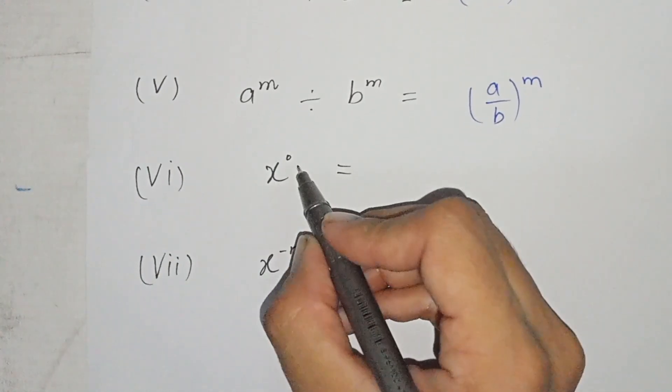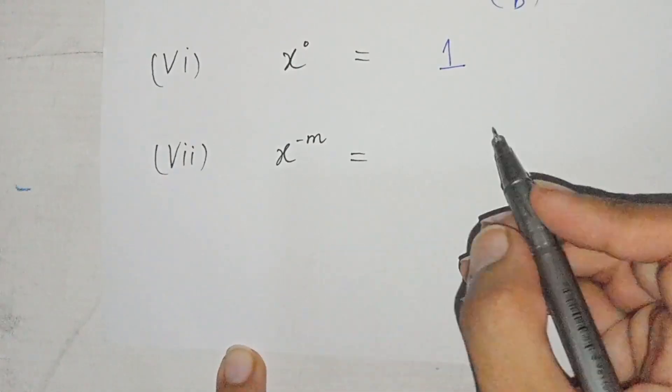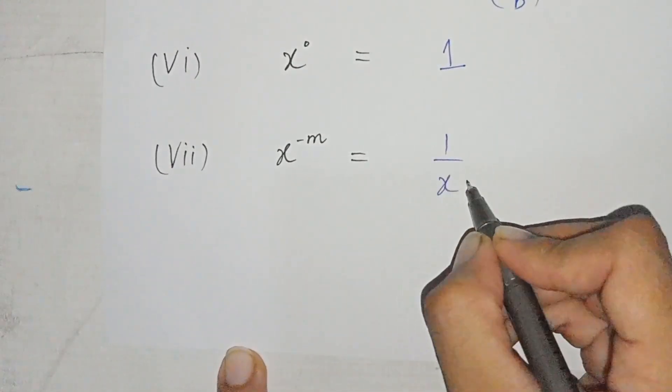When the power is zero, then we get one as the answer. If the power has a negative sign, then it will be changed like that.